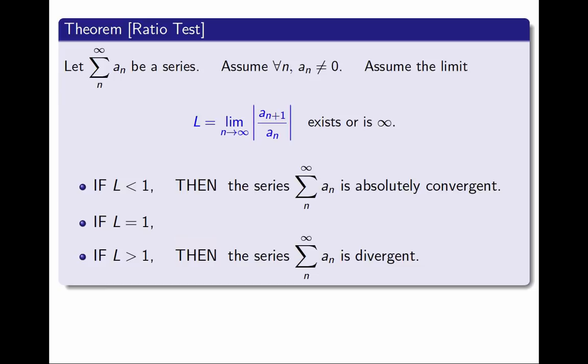And there is a middle case. When the limit is 1, then I can draw no conclusion. Every theorem about convergence of series has a case like this. In some cases, they are able to tell us whether the series is convergent or divergent, but there is always a situation in which they don't give us any information. In this case, when the limit is 1, the series could be absolutely convergent, or conditionally convergent, or divergent, but we don't know yet. We have to try something else to figure out which one it is.